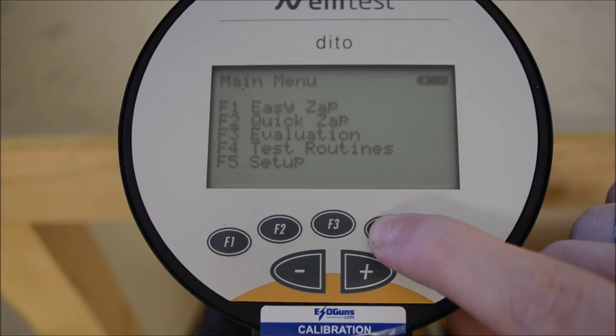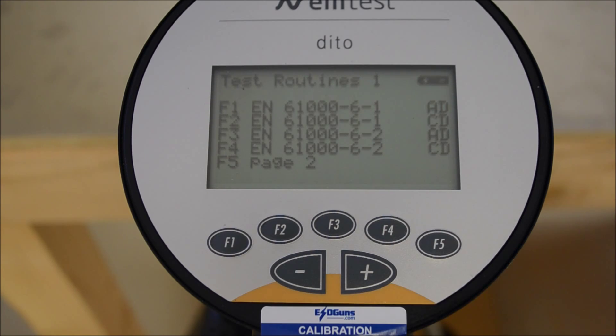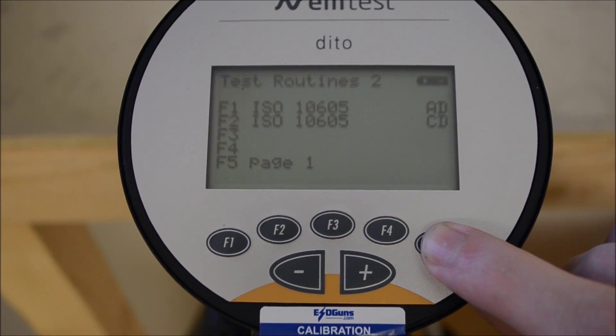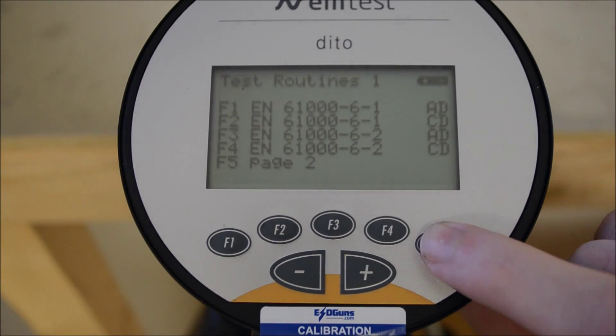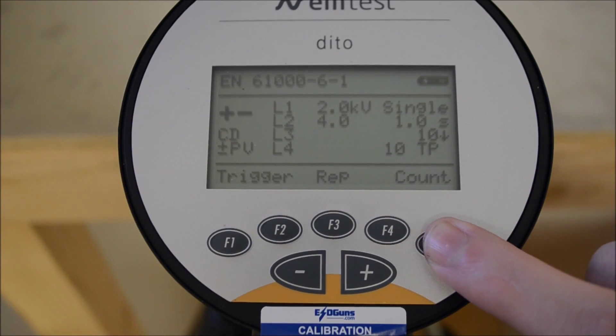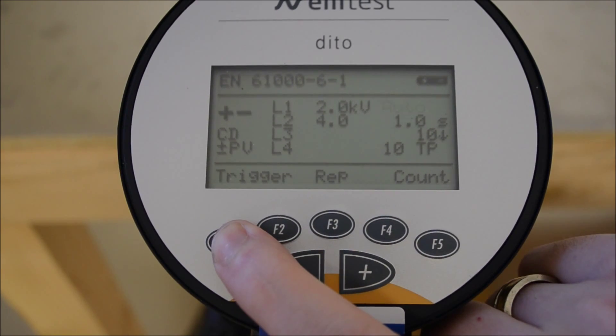Test routines mode will run test sequences on a predefined number of test points while automatically alternating polarity at each voltage level. F4 takes us into test routines mode with several pre-programmed routines. These routines can be changed to meet your needs. Additionally using the ESD DOT control software you can create and upload new test routines to the generator.